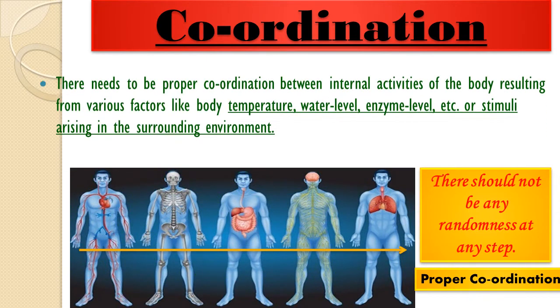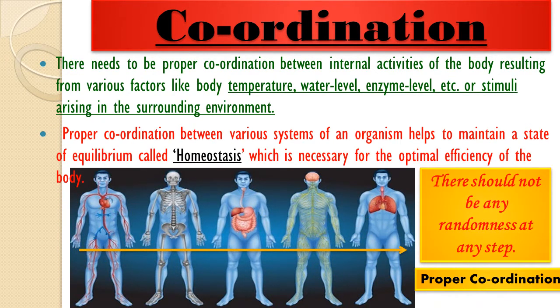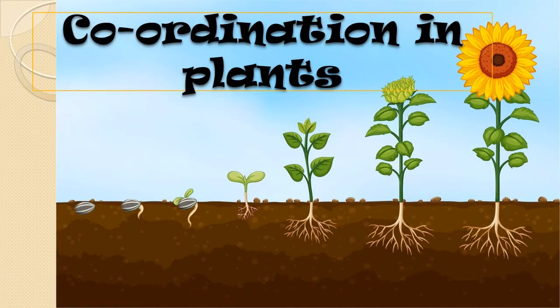There needs to be proper coordination between internal activities of the body — resulting from various factors like body temperature, water level, enzyme level, etc. — and stimuli arising in the surrounding environment. Proper coordination between various systems of an organism helps to maintain a state of equilibrium called homeostasis, which is necessary for the optimal efficiency of the body.